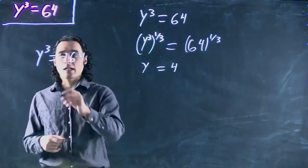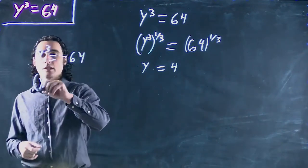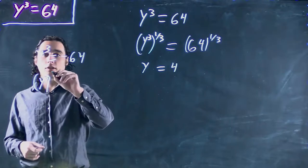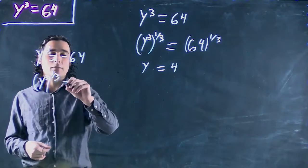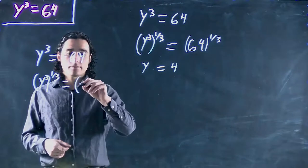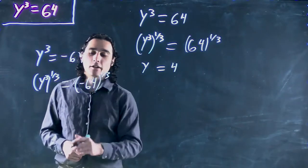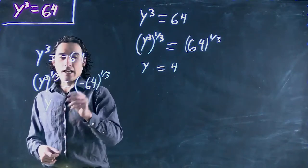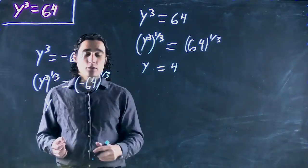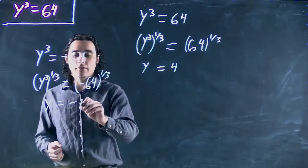Well, we start off the same way. We take the cube root of both sides or put both sides to the power of 1 third. But when we punch this into our calculator, what we're going to find is that the cube root of negative 64 is negative 4.